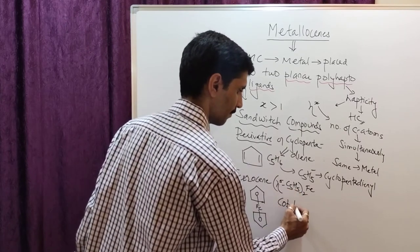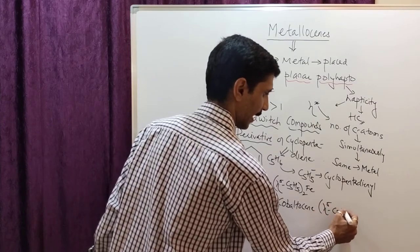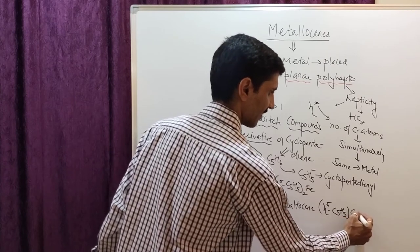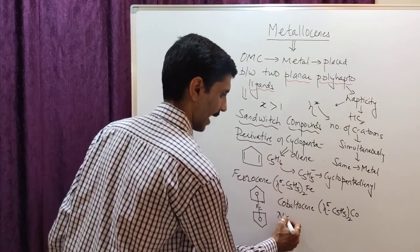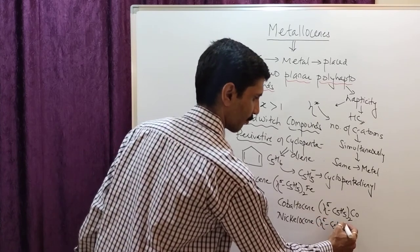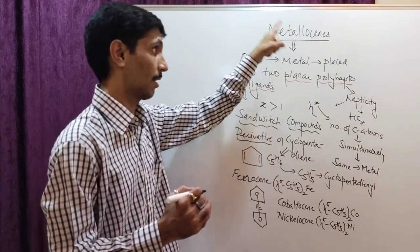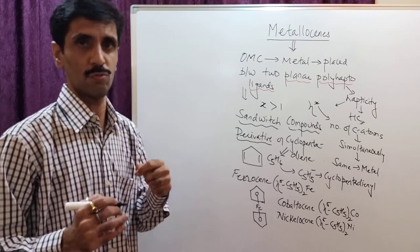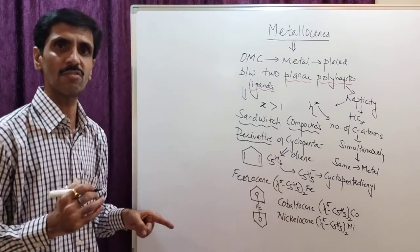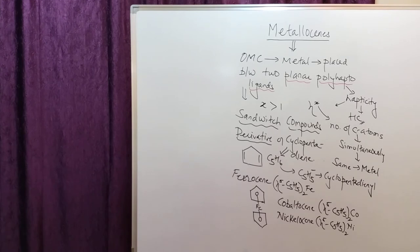Similarly we also have cobaltocene, with formula (η⁵-C5H5)₂Co, and nickelocene, with formula (η⁵-C5H5)₂Ni. These are certain examples, all of which come under the broad heading of metallocenes, and metallocenes are basically a part of organometallic compounds. I am sure you have understood the introduction part — please have a look at it so that you get a better understanding of metallocenes. Thank you.